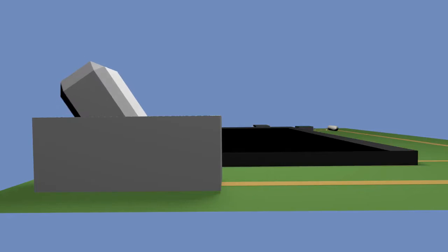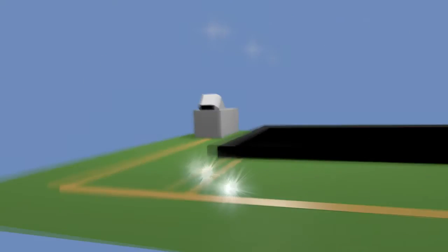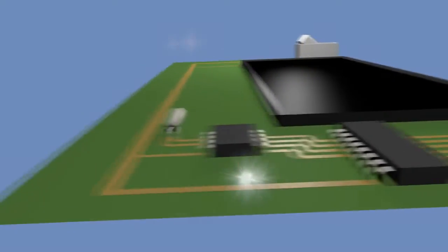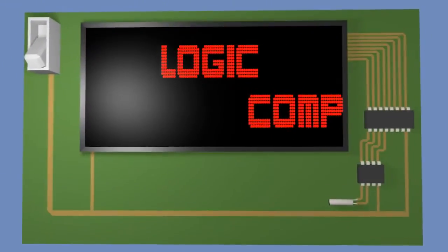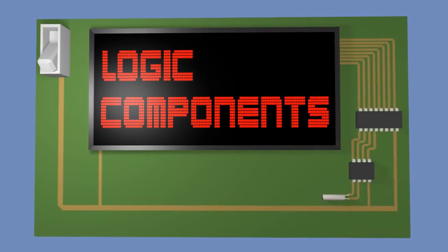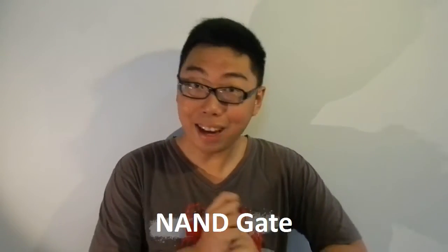Ladies and gentlemen, you're watching episode 3 of Logic Components. Hello and welcome back. Last week we looked at AND, OR, and NOT. What we're going to do today is look at some variants of the AND and OR gate, some of them actually involving the NOT gate. So let's start off right away with something a little simpler — let's take a look at the NAND gate.